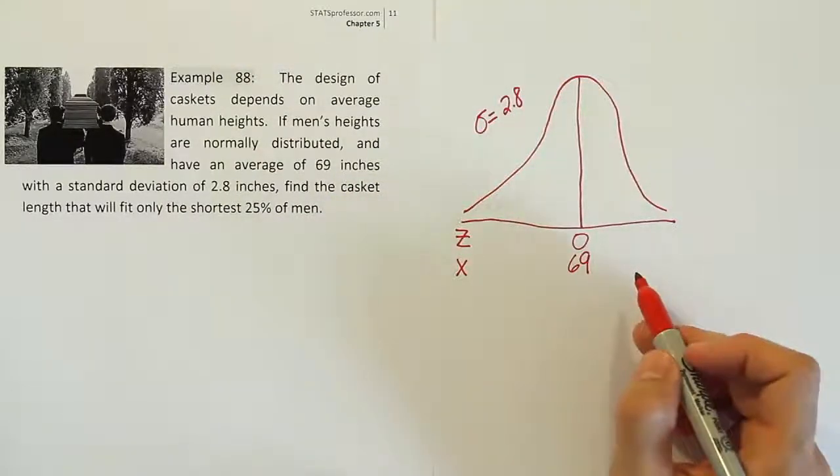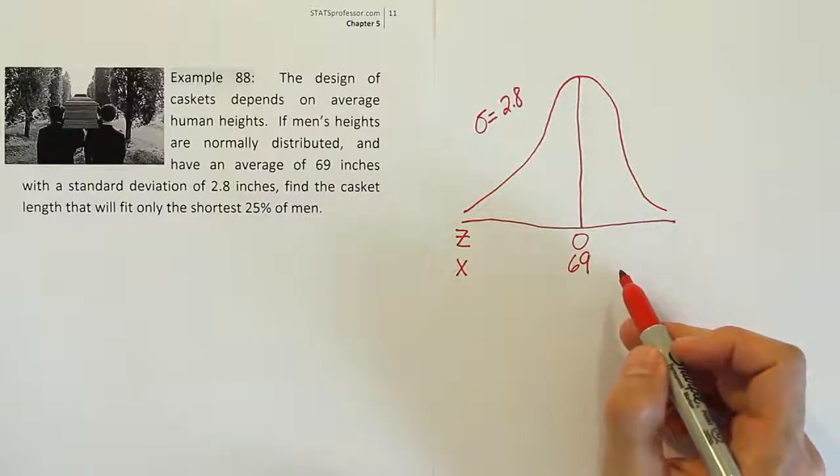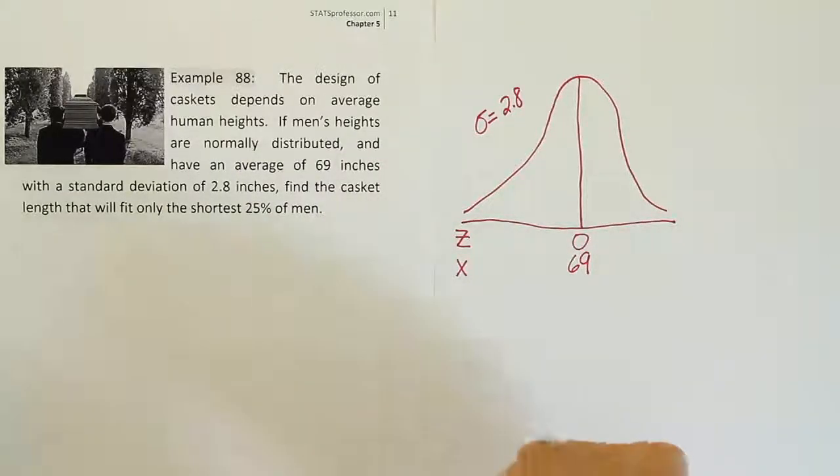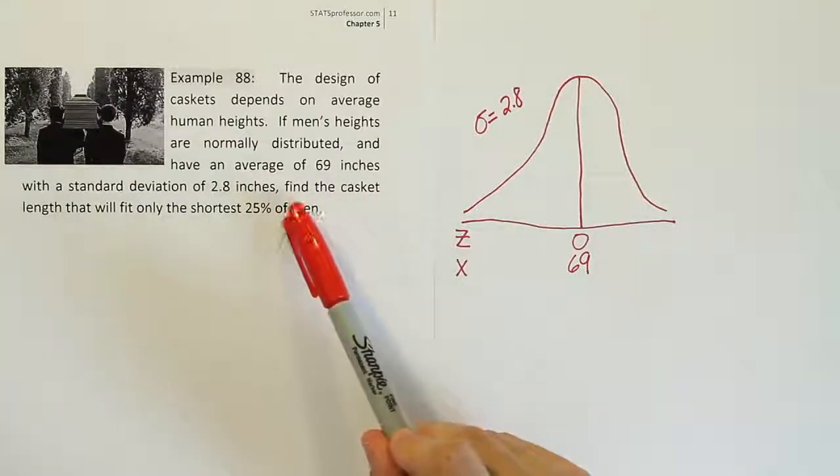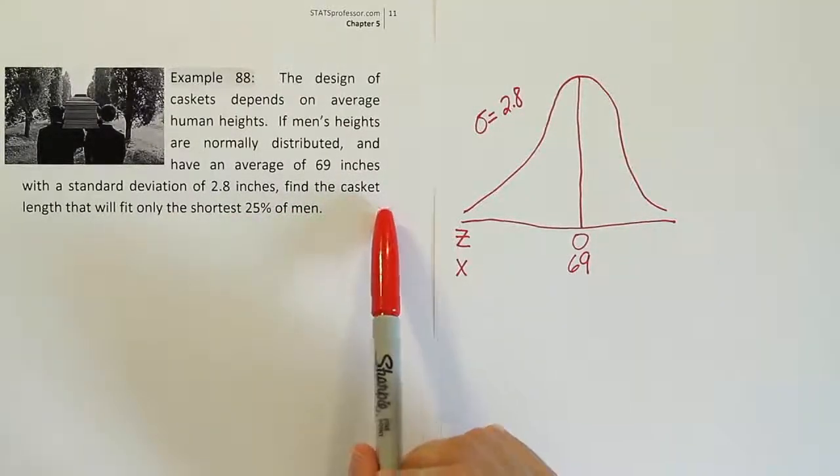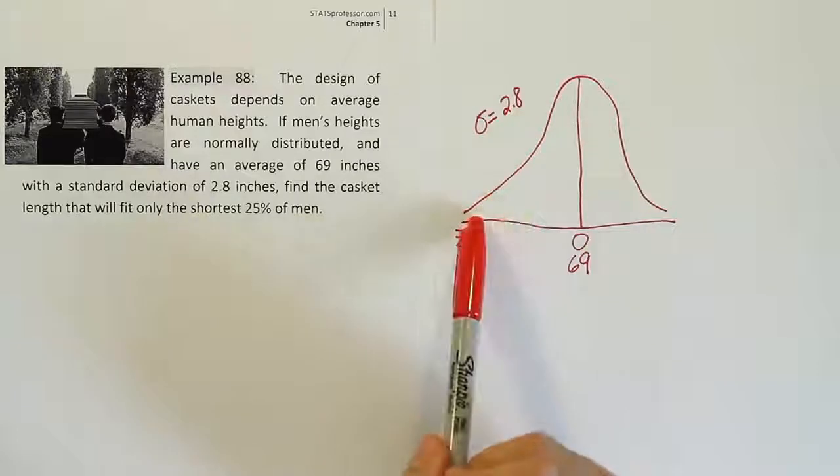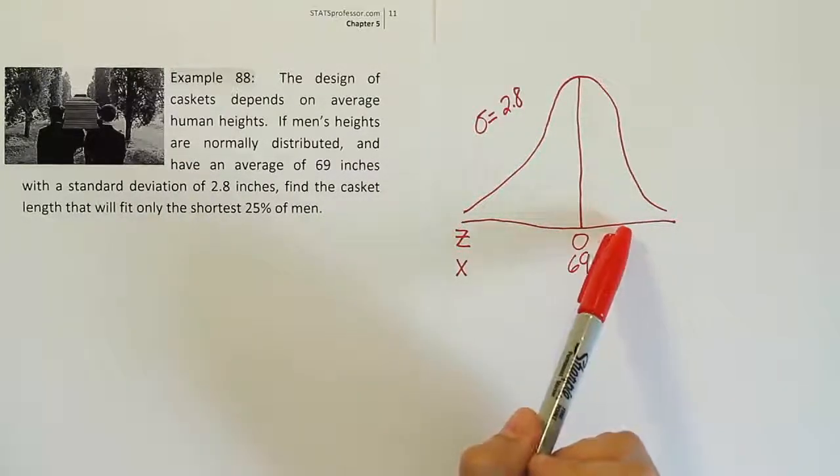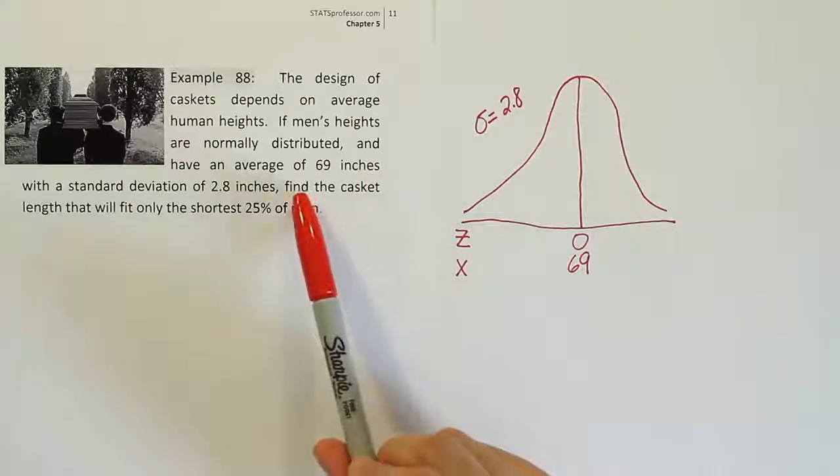So now that we have that labeled and set up, our next task is to figure out what we're being asked to find in the problem. So very clearly it says find the casket length. Notice that that's not a probability. A lot of times we're given bell curve problems, they ask us to find the probability that a certain thing is true.